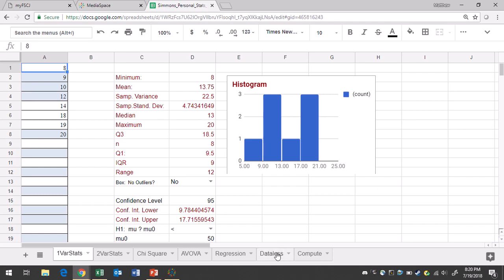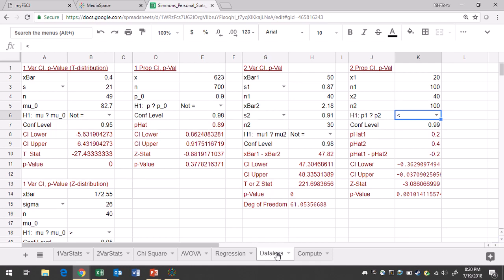and you're dealing with two samples with proportions. So you'll go over to the area that says 2 prop CL p-value. That's where you do your two-sample hypothesis testing when it comes to proportions.